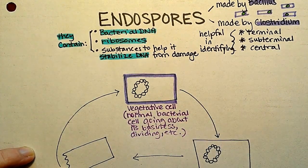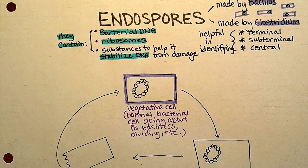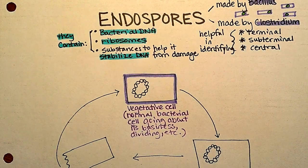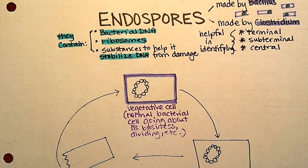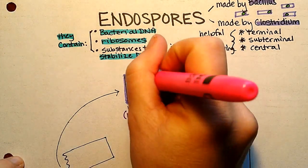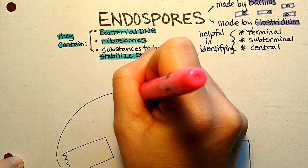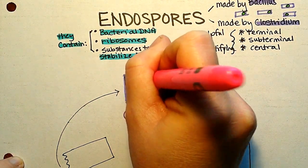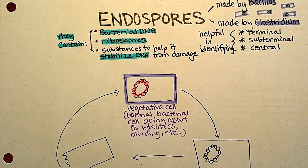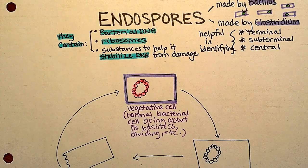This vegetative cell is doing what you would expect a bacterial cell to do: it's metabolizing, making ATP, and dividing. It has DNA just like all cells — here's its circular DNA. I'm not including any plasmids in this particular drawing.